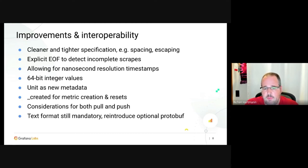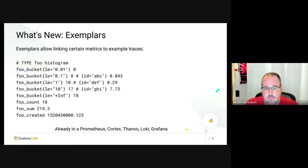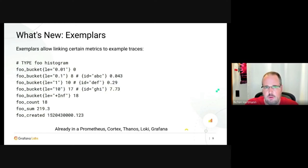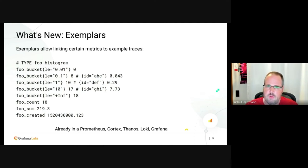For Prometheus itself, text format has actually been quicker than protobuf under high load, but there are scenarios where people prefer protobuf and that's fine. Something completely new is exemplars. If you haven't heard of them, they're absolutely ingenious — they allow you to attach trace information to your metrics. They address the needle-in-a-haystack problem of finding relevant traces.